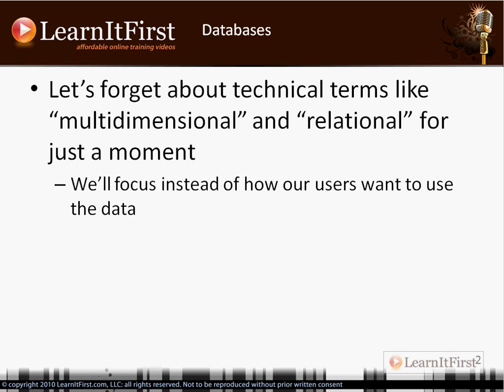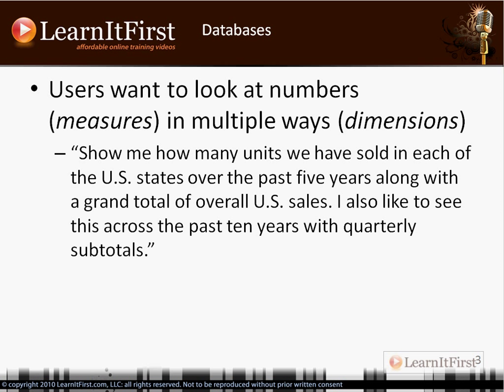For the front part of this video, suspend your thoughts of technical terms — forget about multi-dimensional or relational. Let's just talk about how users want to use the data, how they want to see it and work with it. Users want to look at numbers in multiple ways. The word for numbers in a data warehouse is 'measures,' and the word for how we look at those numbers — the context and perspectives — those are our 'dimensions.'